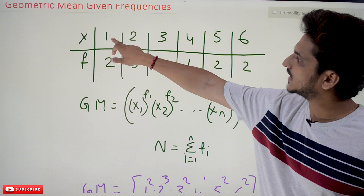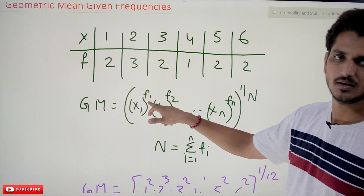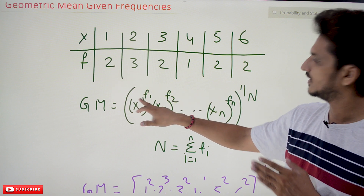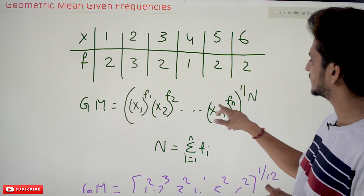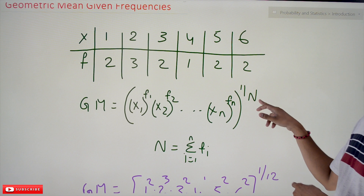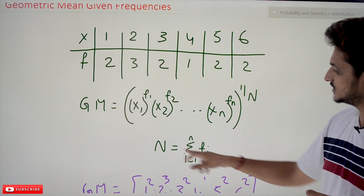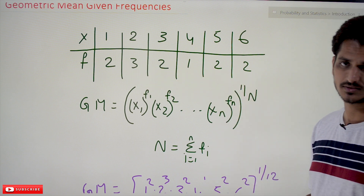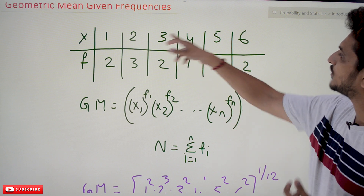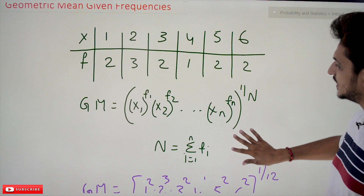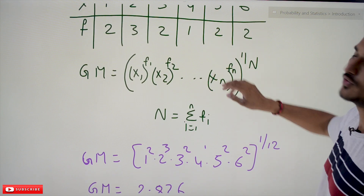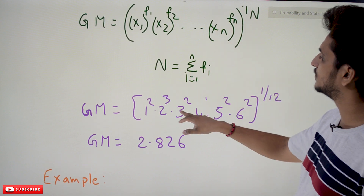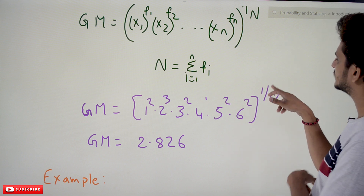This can be written as X1^F1 × X2^F2 × ... × Xn^Fn, whole power 1/N. Here capital N is equal to the sum of all frequencies — that is the total number of data points. So for this example: 1² × 2³ × 3² × ... and so on, whole power 1/12. That is how we calculate the geometric mean given a frequency distribution.